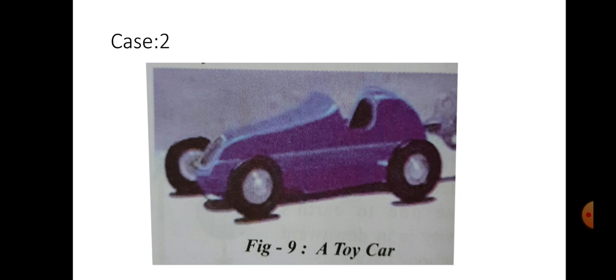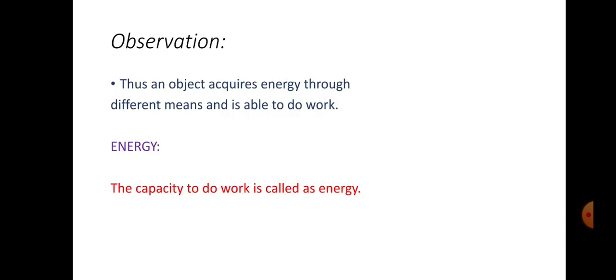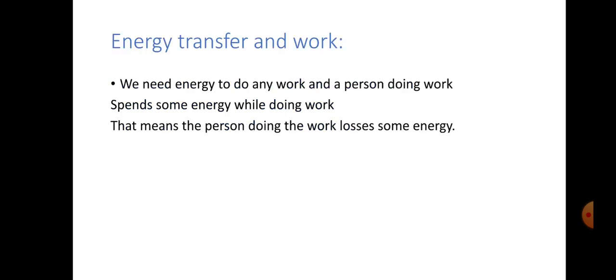After winding the key, the toy car will be in moving position. In that way, any object acquires energy through different means and is able to do work. The capacity of doing work by an object on another object depends on position and state of the object which is doing work. Finally, we can define energy as the capacity to do work.